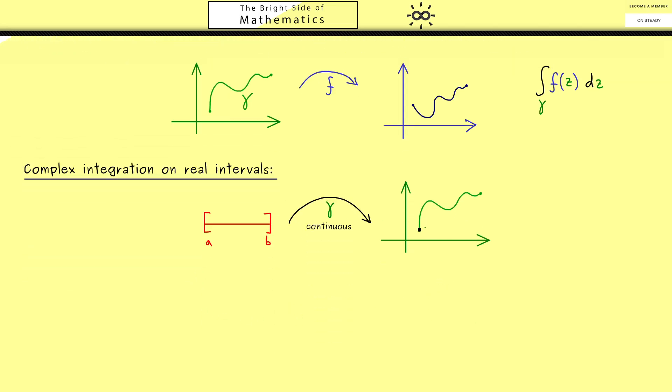Now we should visualize this first point here as the starting point gamma of a. And then the last one here could be gamma of b. In other words if this map gamma is nice enough this interval is just transformed into such a curve. And then we don't have any problems defining the integral for gamma.